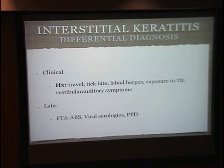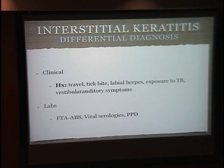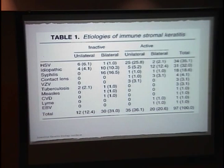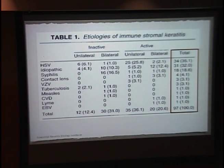To further narrow your differential, take a good history — asking about travel, tick bites, recent herpes, exposure to TB, and vestibular symptoms — and consider ordering syphilis labs, viral serologies, a PPD, and maybe a chest X-ray. Here's a table from a 10-year study with 97 patients with interstitial keratitis showing the etiologies more recently. Notably, HSV is by far the most common at 34 out of 97 patients, followed by idiopathic and then syphilitic.